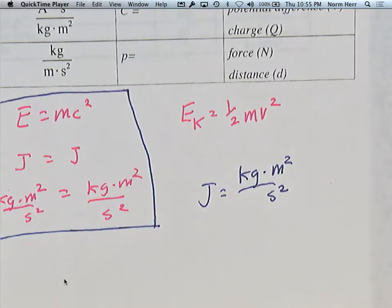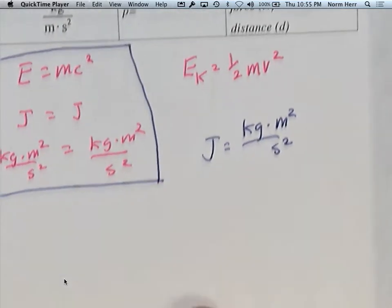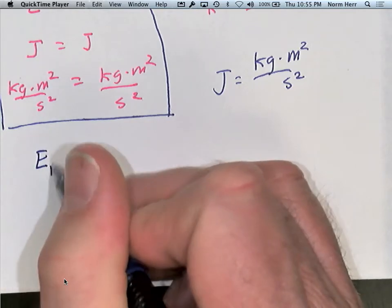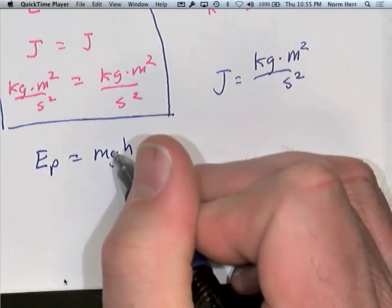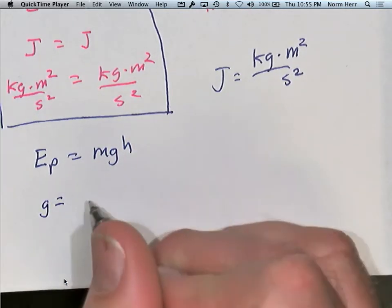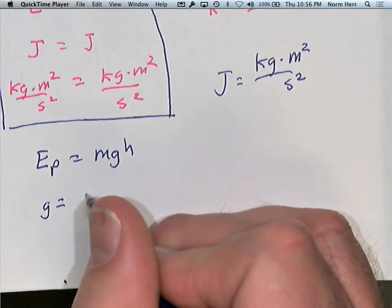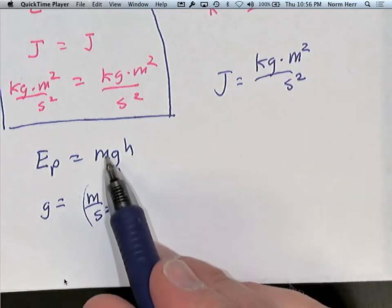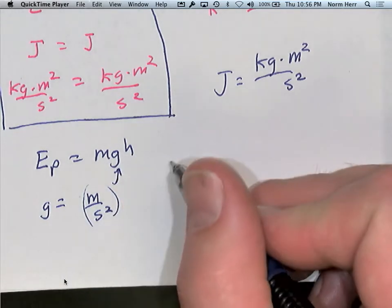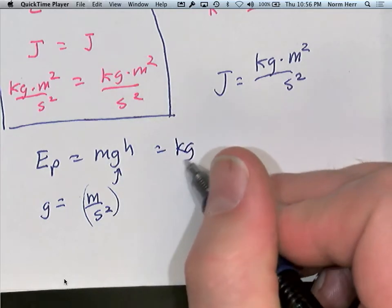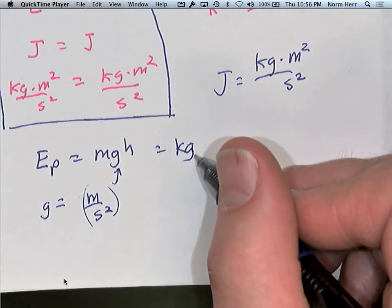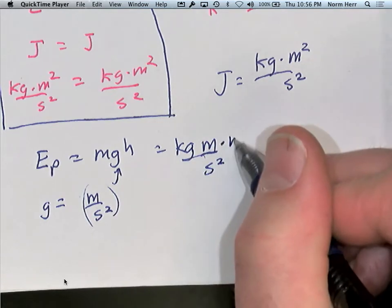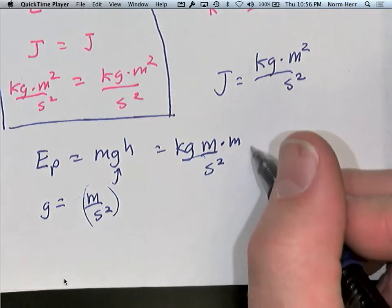This is going to be true no matter how we look at it. For example, gravitational potential energy is expressed as MGH, where G is acceleration due to gravity — 9.8 meters per second squared — M is mass in kilograms, and H is height in meters. Expressing that in SI units: kilograms times meters per second squared times meters gives kilograms meters squared per second squared, which is also equal to a joule.